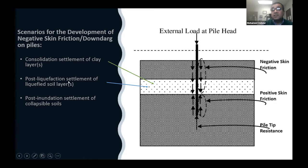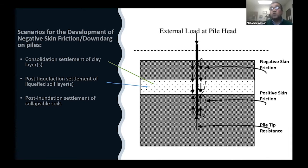The second scenario that could trigger down drag force is post-liquefaction settlement of a liquefied soil layer. You can see this kind of problem on the West Coast, in Washington State and California, in highly seismic zones. When the soil liquefies, extra pore pressure builds up; after liquefaction, that pressure starts dissipating, the water drains out, the void ratio is reduced, the soil layer settles, takes the overlying layers with it, and generates negative skin friction and down drag force on the pile.